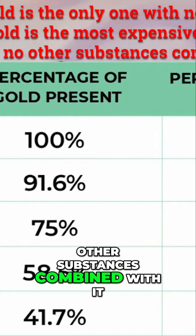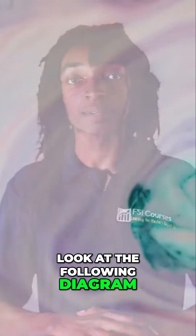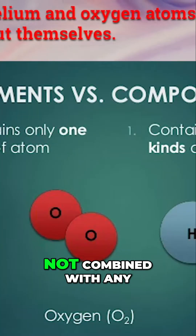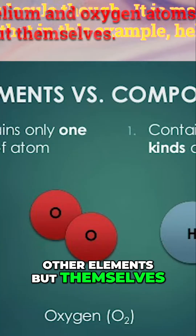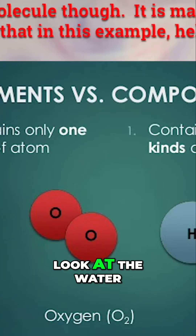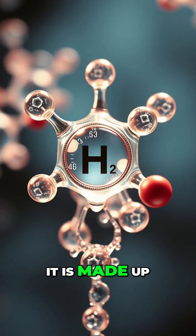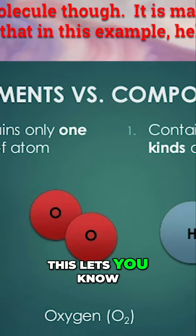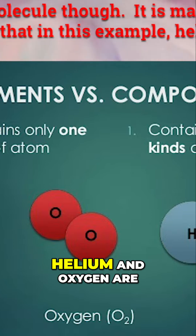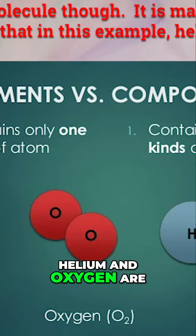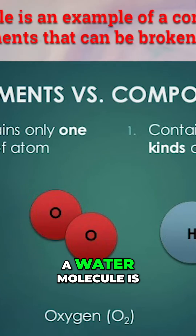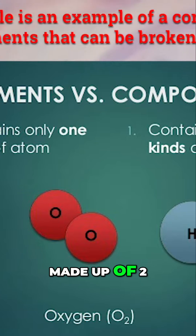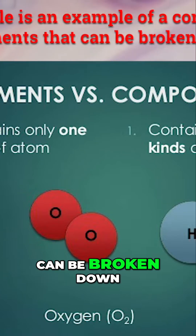Look at the following diagram. Notice that the helium and oxygen atoms are not combined with any other elements but themselves. Look at the water molecule, though — it is made up of hydrogen and oxygen. This lets you know that in this example, helium and oxygen are samples of elements, and the water molecule is a sample of a compound because it is made up of two or more elements that can be broken down into smaller parts.